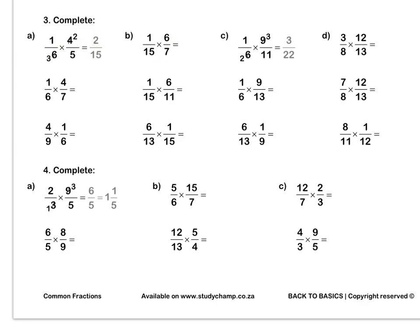Let's do B together. We can simplify the 6 and the 15 by dividing both by 3. 6 divided by 3 is 2, and 15 divided by 3 is 5. Then we multiply out and we get 2 out of 35. Press pause to complete questions A and B by yourself.